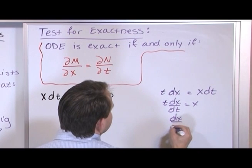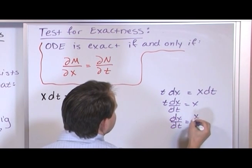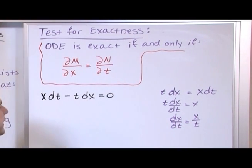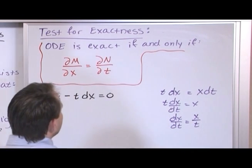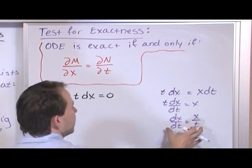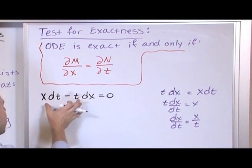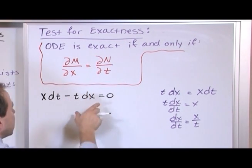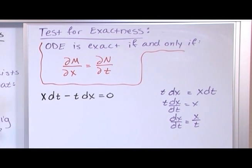And so if I move this guy over, t dx dt is equal to x and if I move the t over there dx dt is equal to x over t. So you see there's the original differential equation that we really have there and you might be given, it might be given to you this way but when you rearrange it you're allowed to write it into this form which we know is exact.